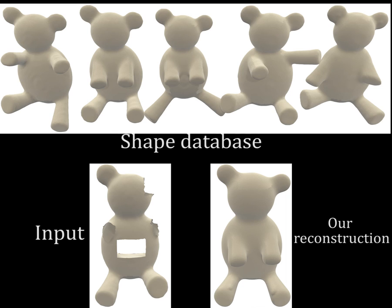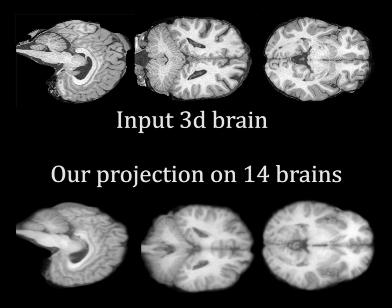Similarly, our tool finds the best optimal transport combination of shapes, which best approximates an input shape with missing geometry. This can also be used for brain imaging.